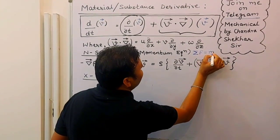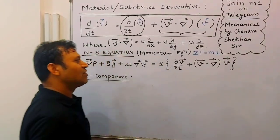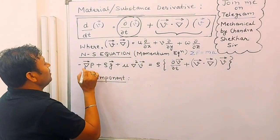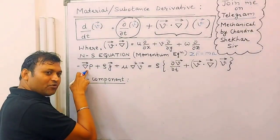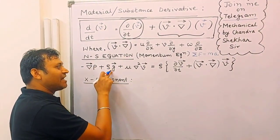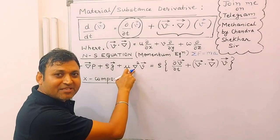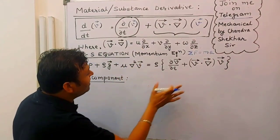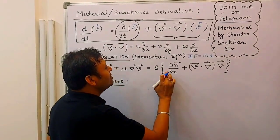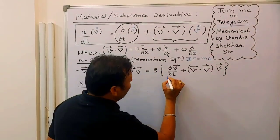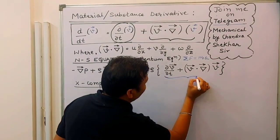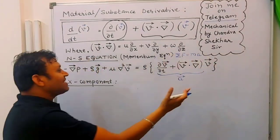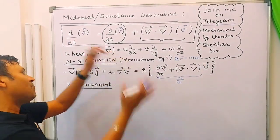Net force equals mass into acceleration. If you see this expression I have already written, the first term represents the pressure force, the second term represents the gravity force, and the third term represents the viscous force. Forces are on the left-hand side, and the right-hand side involves rho multiplied by the acceleration.